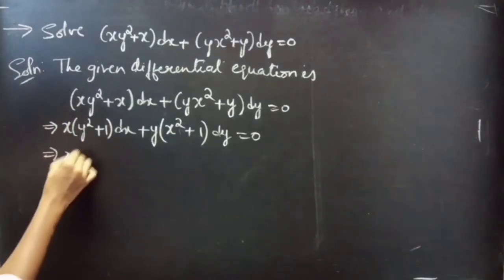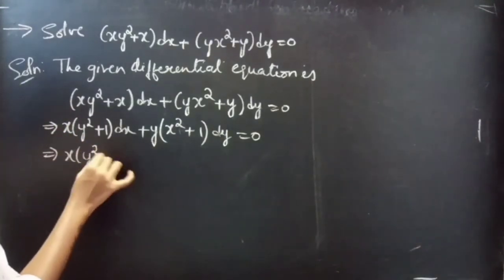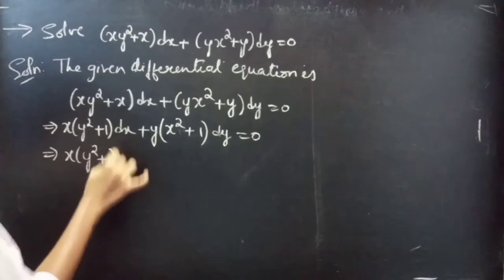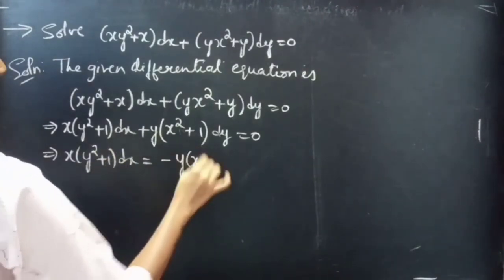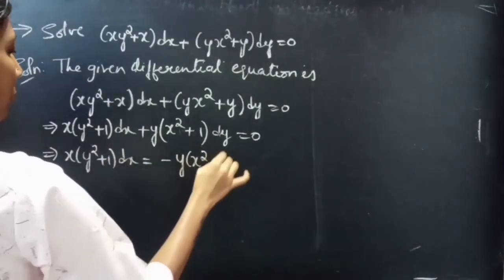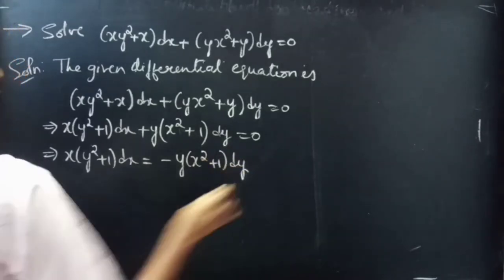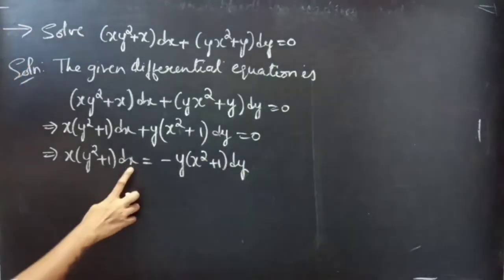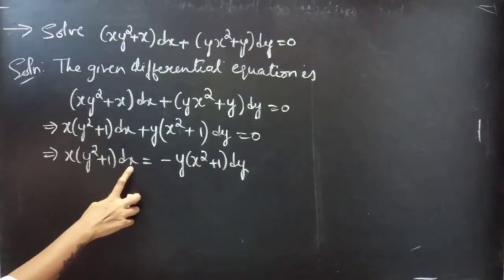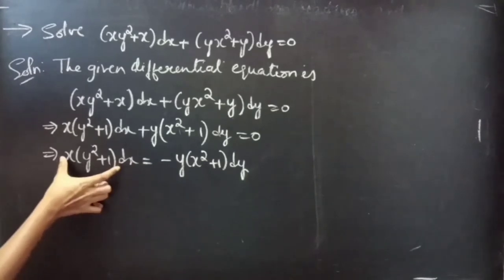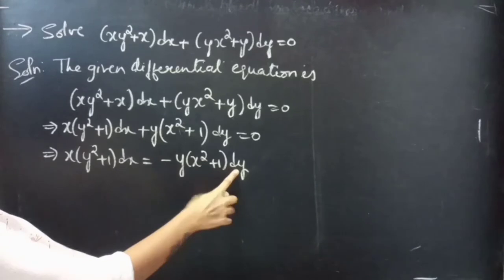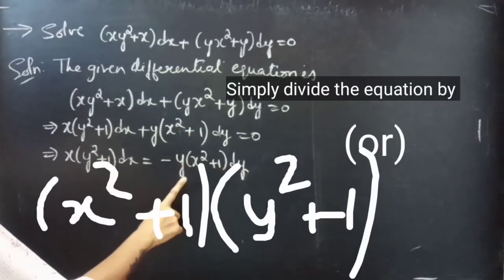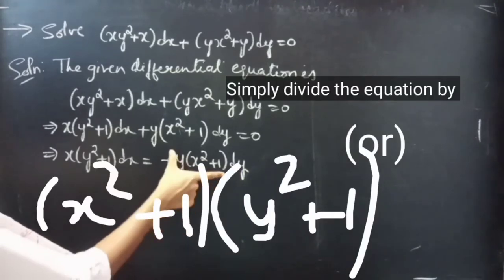We write this as x(y² + 1)dx = −y(x² + 1)dy. Since we have dx here, we need to get terms of x on this side, and since we have dy, we need to get terms of y on the other side.